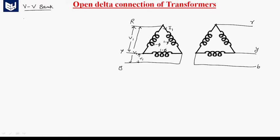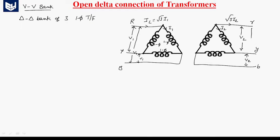This is a delta-delta bank of single phase transformers. The voltage between phases R and Y is V1, between Y and B is also V1, and between R and B is also V1. On the secondary side, the voltage between each pair of phases is V2.